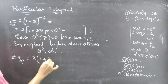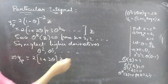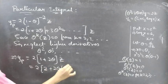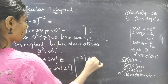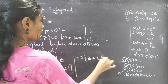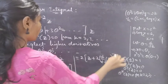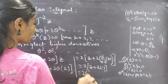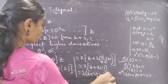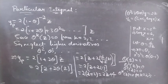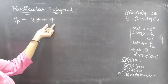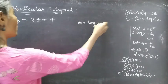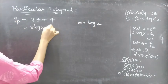So yp equals 2 times (1 into z plus 2 theta of z), which equals 2 times (z plus 2 times 1), since the derivative of z with respect to z is 1. This gives 2 times (z plus 2), which equals 2z plus 4. Writing in terms of x by replacing z with log x, yp equals 2 log x plus 4.